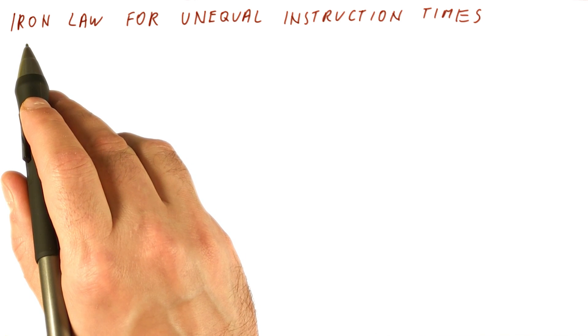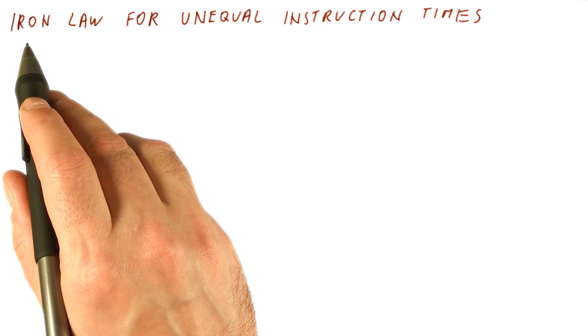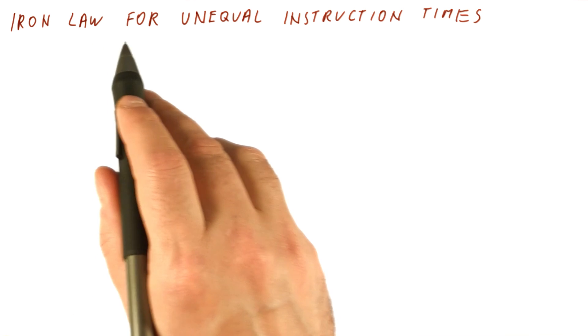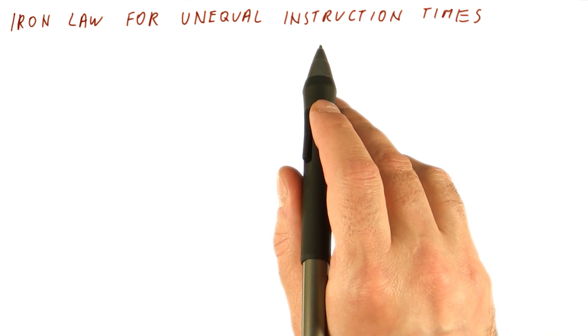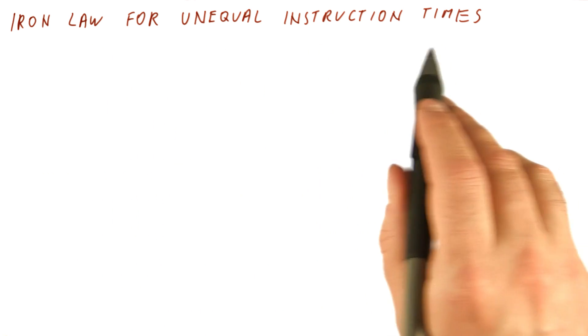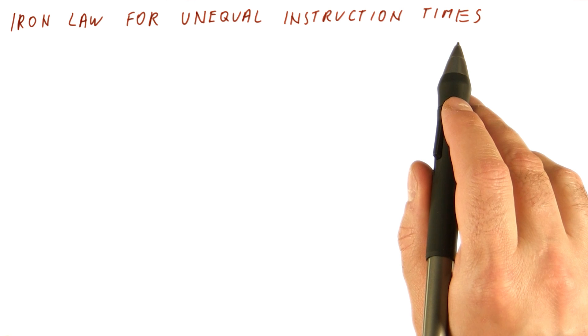So the iron law of performance can easily be applied when we spend a constant number of cycles for each instruction. But how about unequal instruction execution times, meaning we spend different numbers of cycles for different instructions?